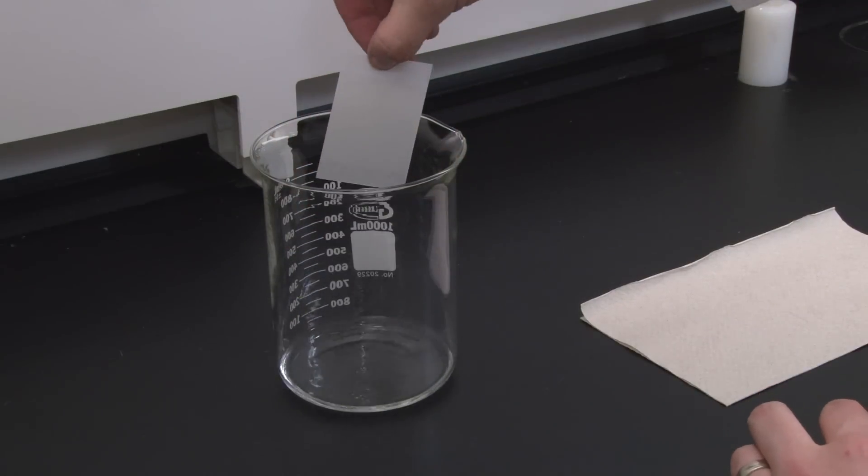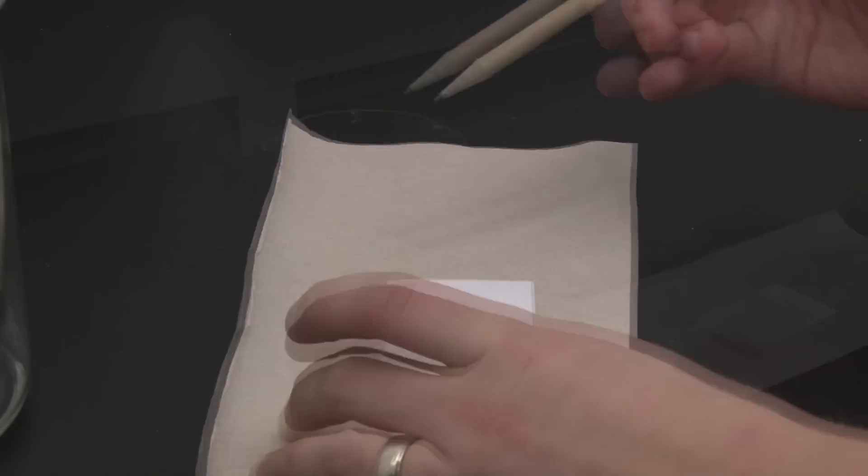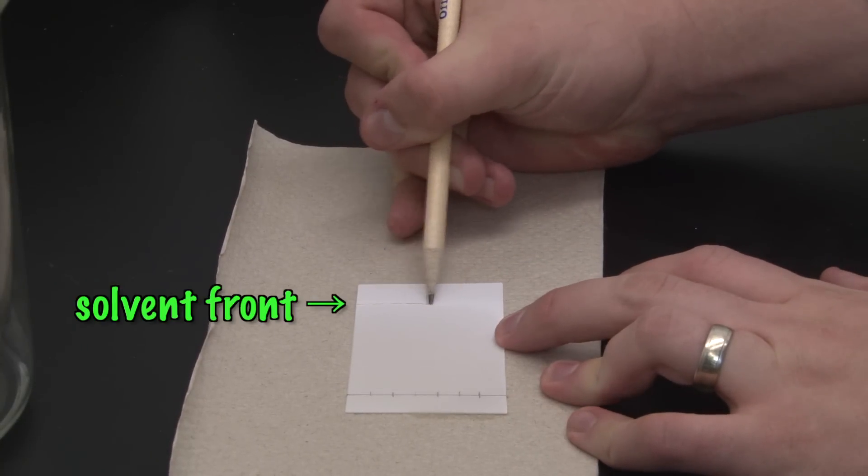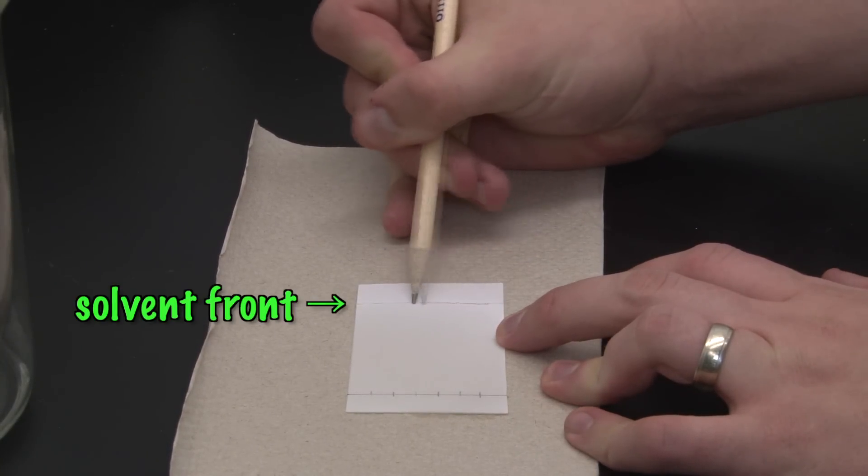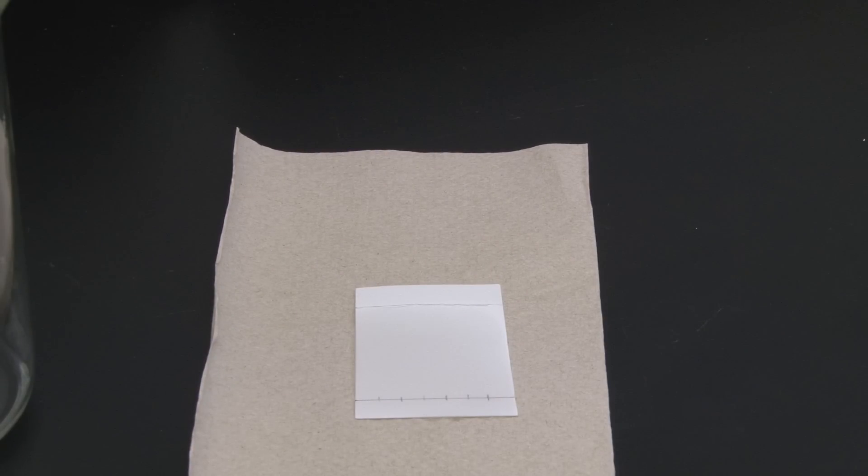Remove the TLC sheet once the solvent has made it up to about one or two centimeters from the top. Place it on a paper towel, and use a pencil to mark the solvent front. We'll need to know later how far the solvent traveled, so be sure to mark it before the solvent evaporates. Leave your sheet under the hood for a few minutes until the solvent has evaporated and your sheet is dry.